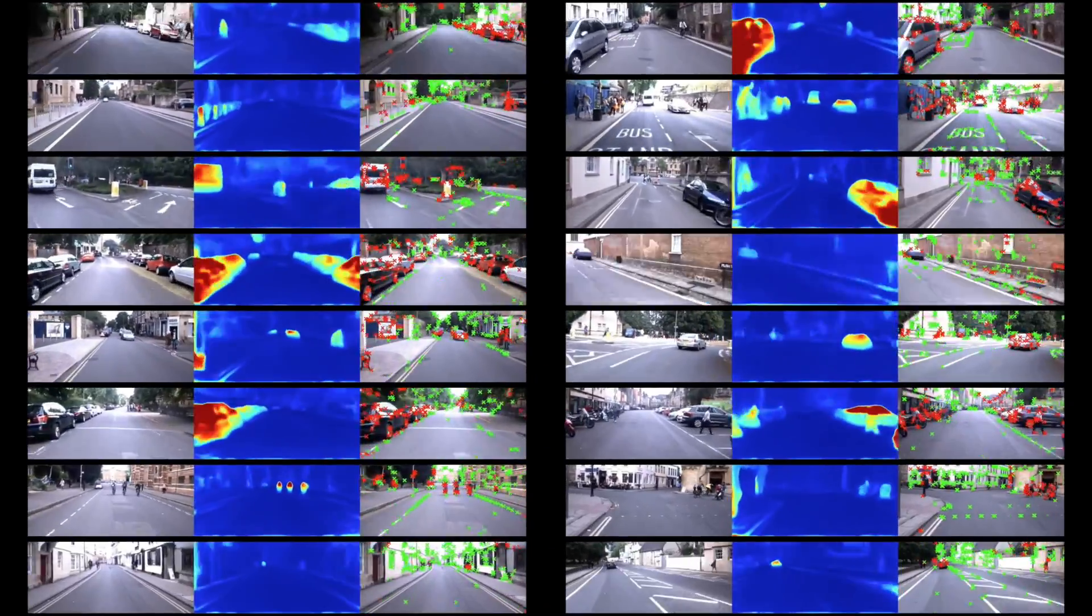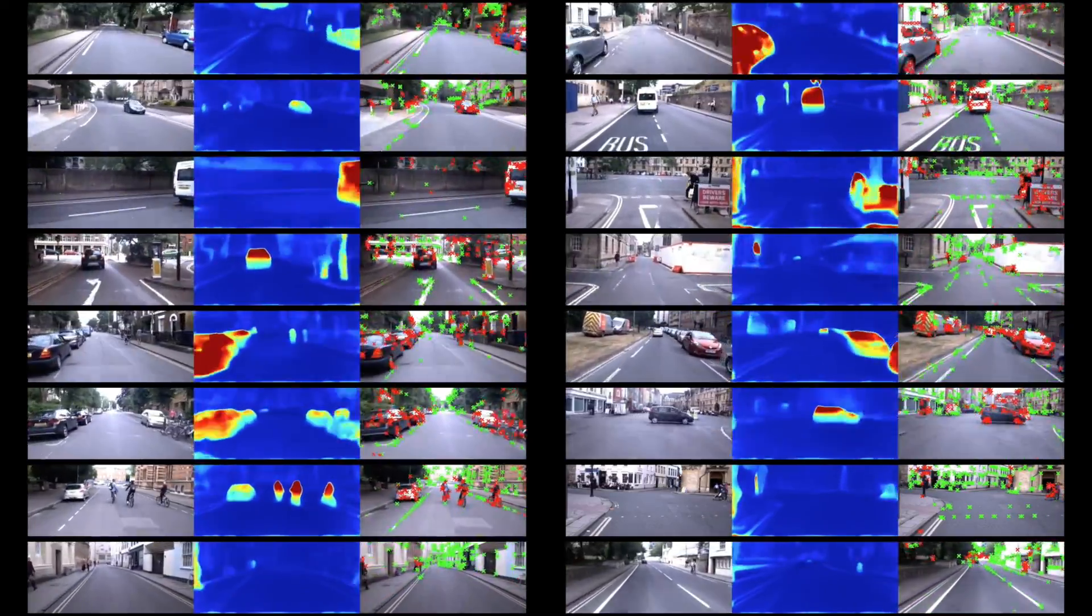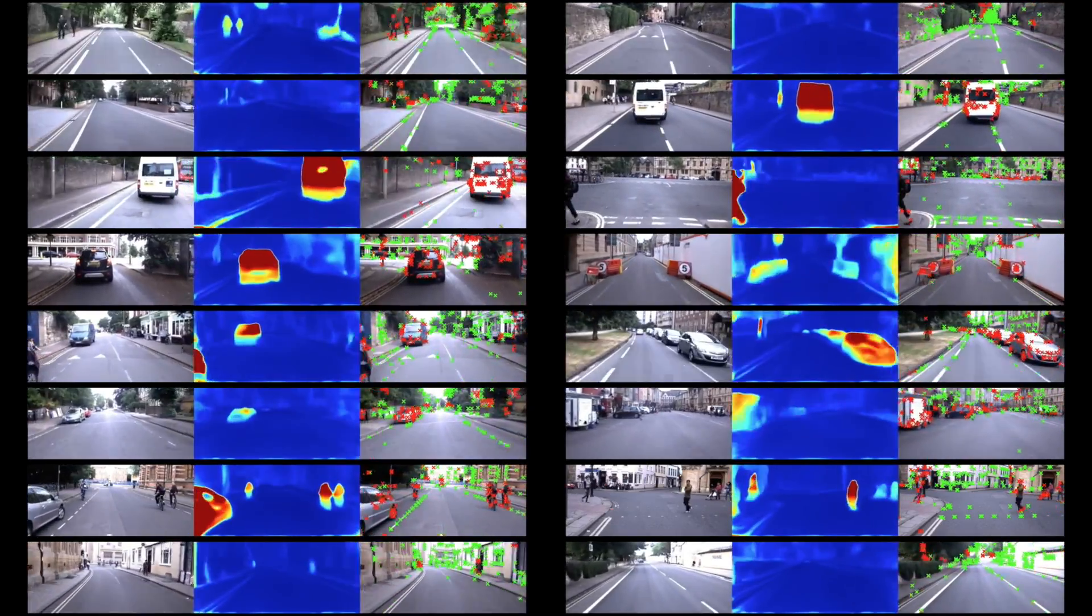We evaluated our approach on more than 400 kilometers of driving from the Oxford robot car dataset covering a wide variety of traffic, lighting and weather conditions.